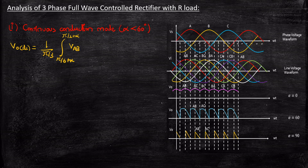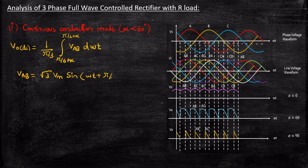We are considering VAB, which is the line voltage. We have V_out_DC = (1/(pi/3)) times the integral from pi/6+alpha to pi/2+alpha of VAB d(omega·t). We had studied that VAB equals root(3)·Vm·sin(omega·t + pi/6). We substitute this and simplify. The major challenge students face is how to consider the total time period and how to set the lower and upper limits. Once you understand that, the rest is straightforward mathematics. We can factor out 3, giving us the integral with the limits pi/6+alpha to pi/2+alpha of root(3)·Vm·sin(omega·t + pi/6) d(omega·t).